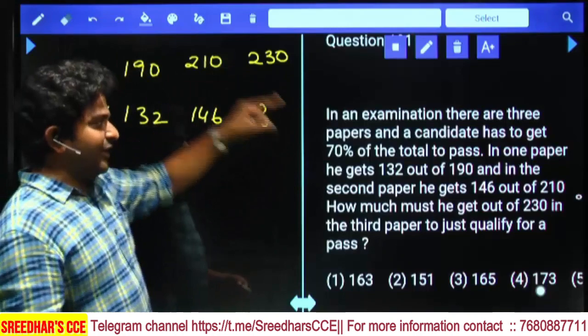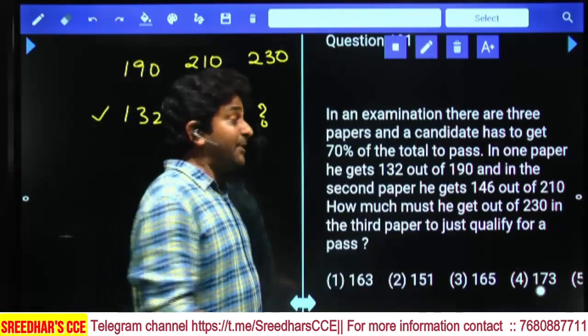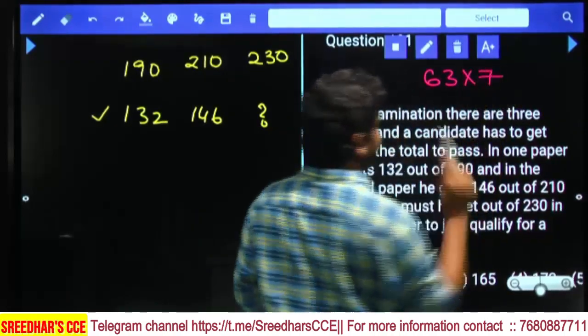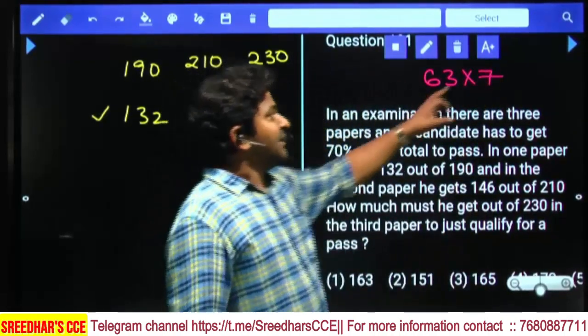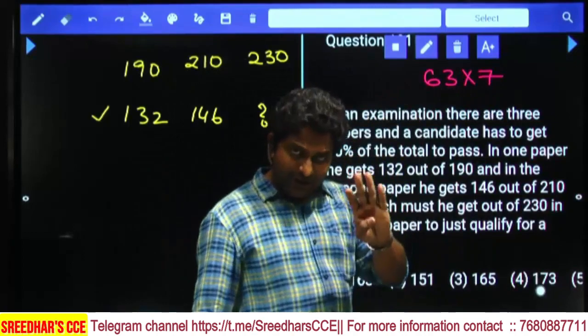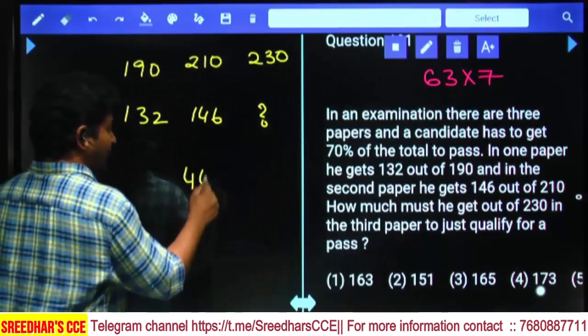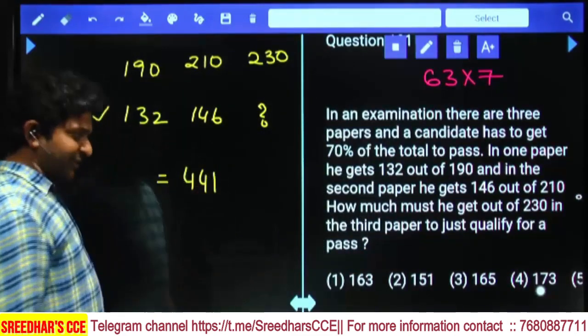Out of 630 we need to get 70%. 10% is equal to 63, so 70% means multiply by 7. 63 times 7 equals 420, then 73 is 21, so we get 441. These many marks we need to get.